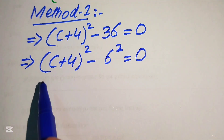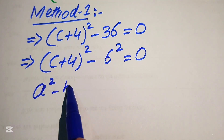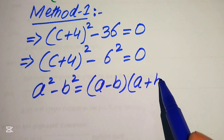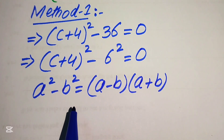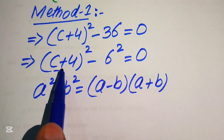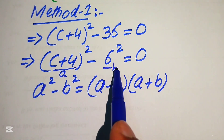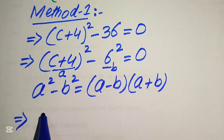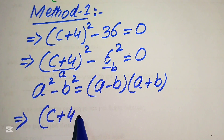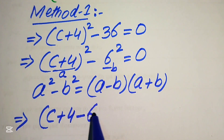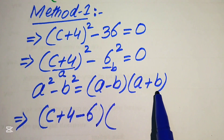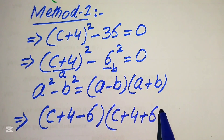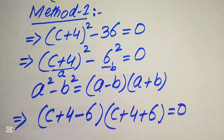Now we apply the algebraic formula: a square minus b square equals (a minus b) times (a plus b). Here our a is (c + 4) and our b is 6. Applying this formula we write the expression as (c + 4 minus 6) times (c + 4 + 6) equals to 0.